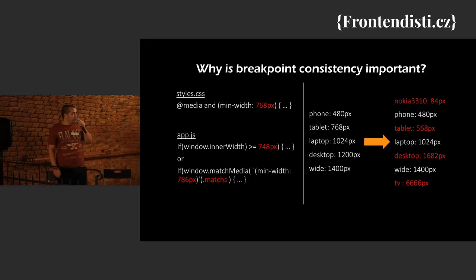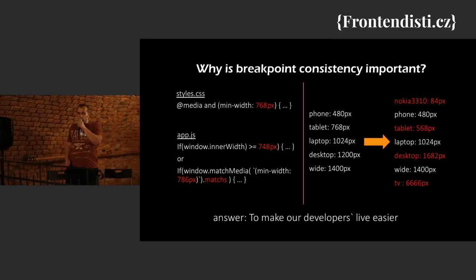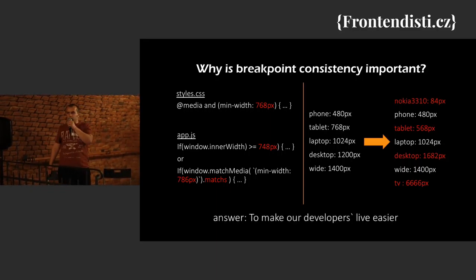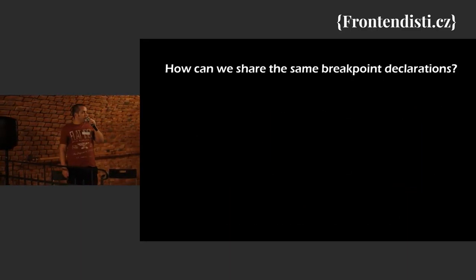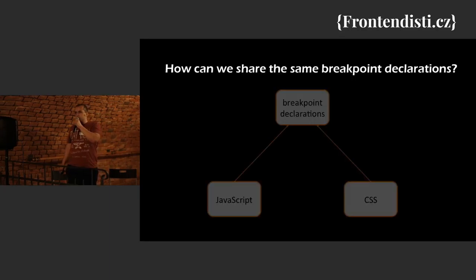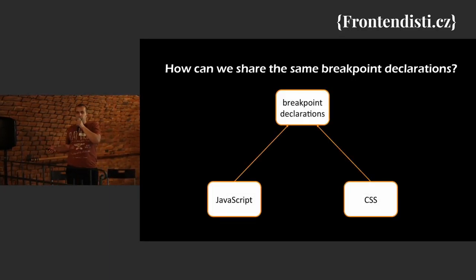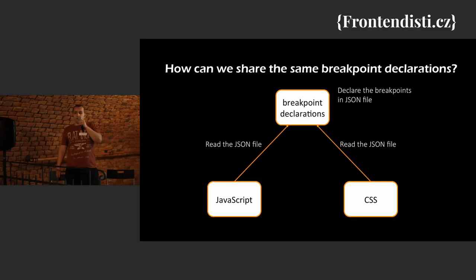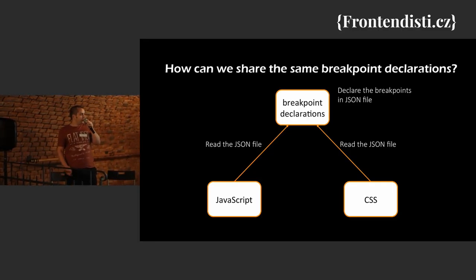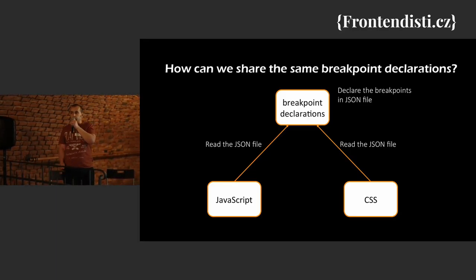So to answer the question — why is breakpoint consistency important? The answer is to make our developers' lives easier. Simple as that. How can we share the same breakpoint declarations? The idea is quite simple: we just define the breakpoints in one place and make JavaScript and CSS use it. This is mainly done with JSON — we declare our breakpoints in a JSON file, and we make JavaScript and CSS read it, so we know it will be consistent.